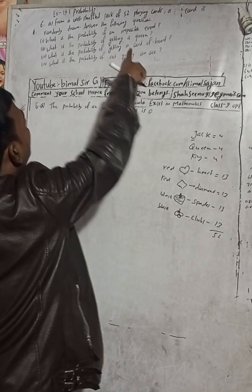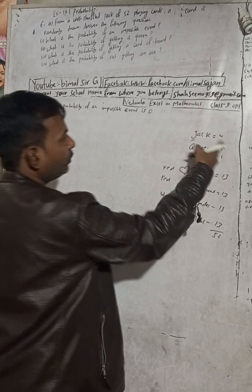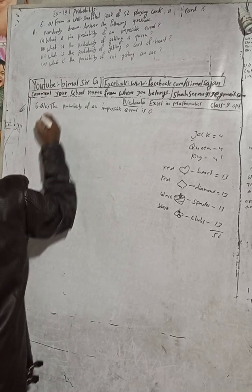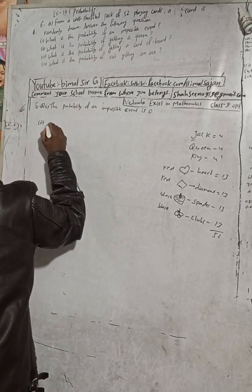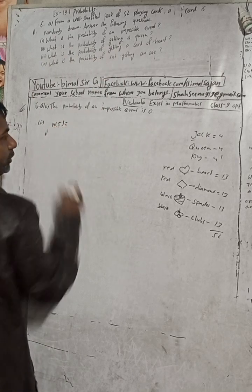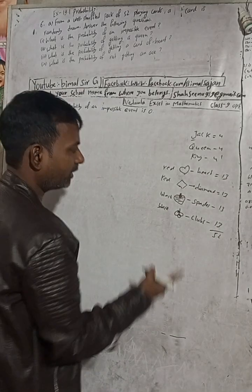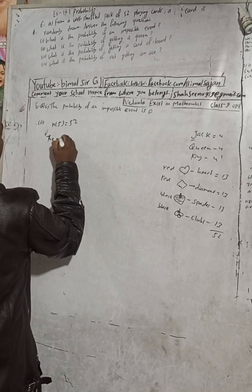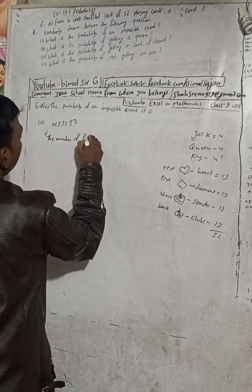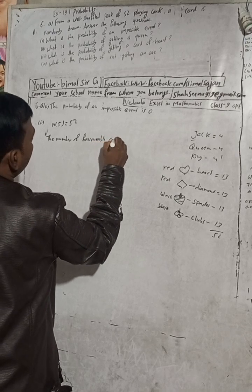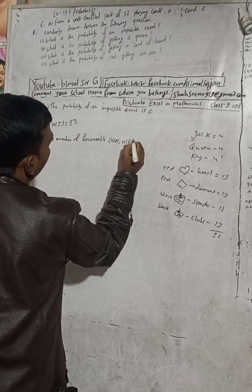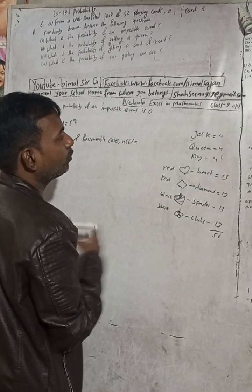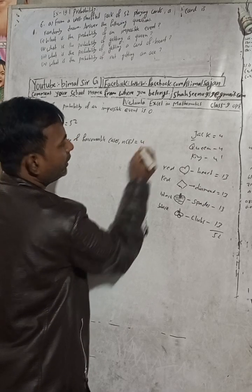Now question two: what is the probability of getting a queen? Total queens in the deck is four. The sample space n is 52. The number of favorable cases — how many queens are there in 52 cards — is four.